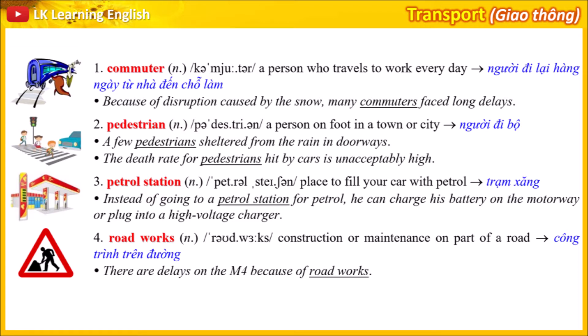2. Pedestrian: a person on foot in a town or city. Example 1: A few pedestrians sheltered from the rain in doorways. Example 2: The death rate for pedestrians hit by cars is unacceptably high.